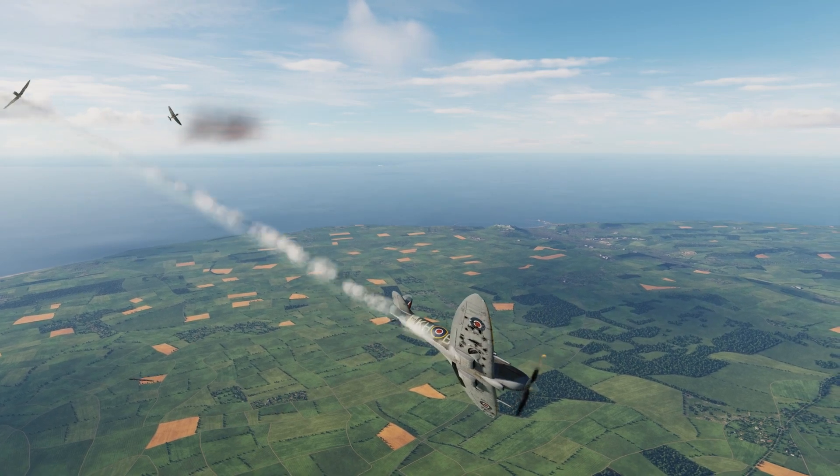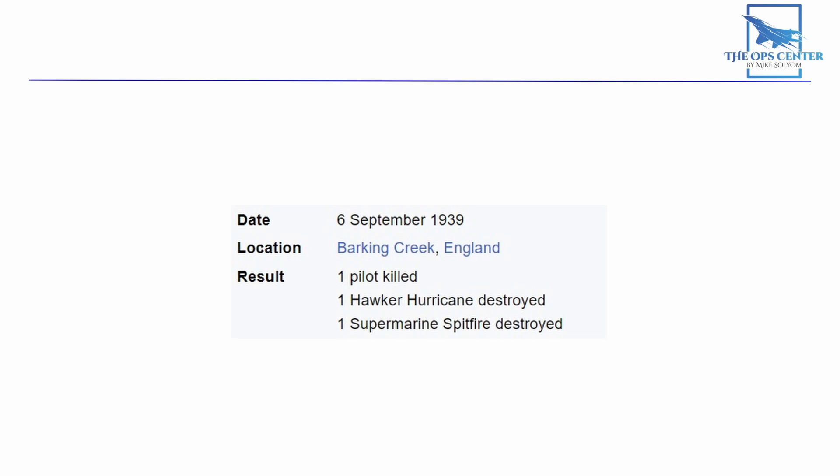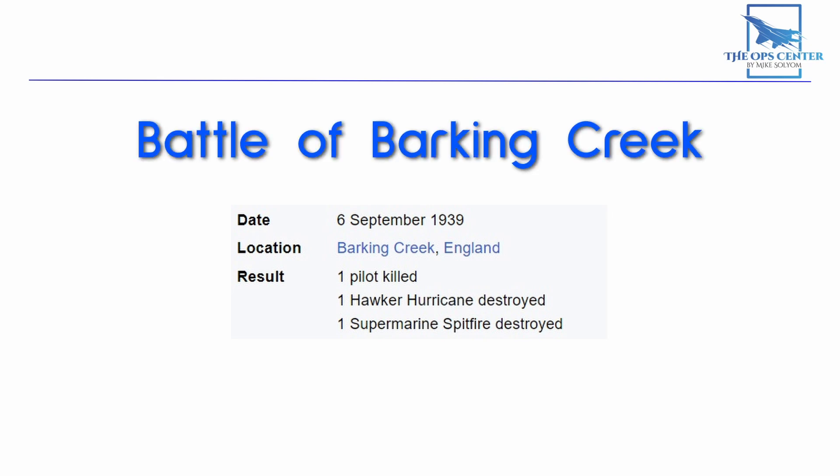They realized what happened after it was too late. In the end, they'd inadvertently shot down two friendly fighters and in the process killed one of their own pilots. This would become known as the Battle of Barking Creek and it resulted in the first death of a British pilot in World War II. Needless to say, this was a mistake that no one wanted to repeat.